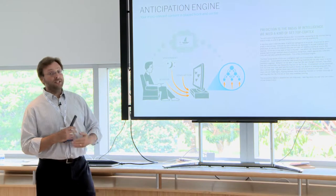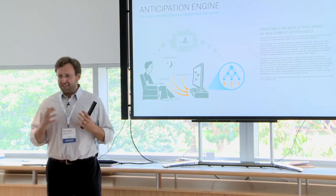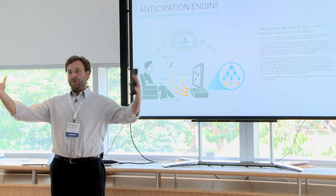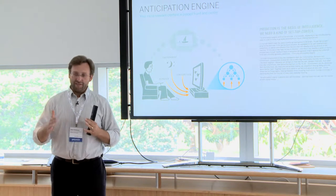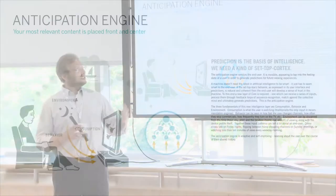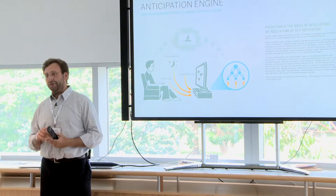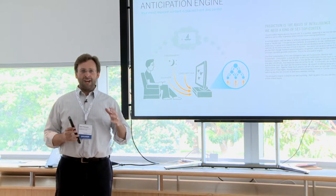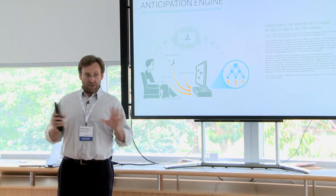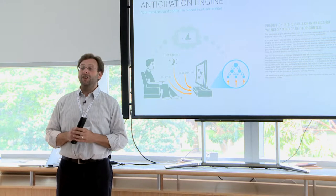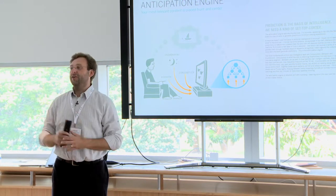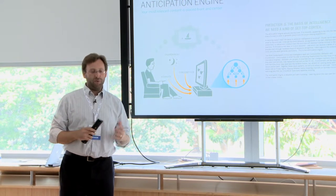Looking at the feature set: what would this interface need to go through millions of pieces of content, bring what you want to the forefront, and get rid of everything else? The first thing is what we call our anticipation engine — a level of intelligence we gave to the interface. It's learning about you over time, figuring out what you like and don't like, based on time of day and profiles. Over time it will say: here's all this content, but we know you're not interested in most of it — here are these three things for you. You'll see an example of that when we show the interface.